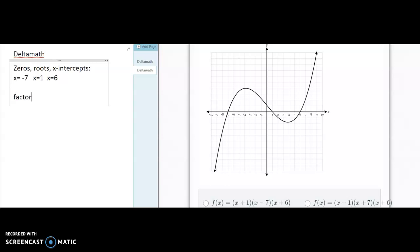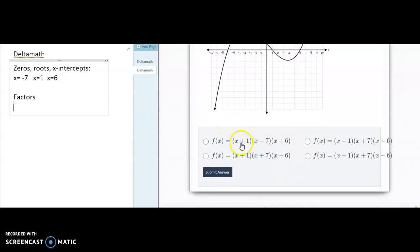Because we have those zeros, we know that our factors are going to be the following. Some students get confused as to how to find the factors. Remember that the factors are the binomials that multiply to give us the polynomial. Normally we solve these factors and say what gives me negative 7. If I have x minus 7 and I just set it equal to 0, the answer is going to be x equals positive 7.